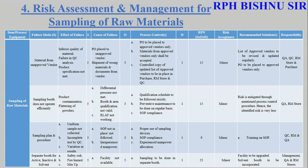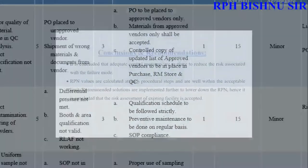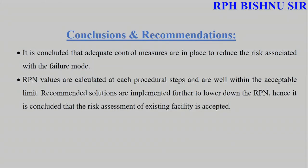Additional failure modes for sampling of raw material include: materials from unapproved vendors, sampling booth not operating efficiently, sampling plan and procedures not in place, and no separate booth for active, native, and solvent materials. Conclusion and recommendation: adequate control measures are in place to reduce the risk associated with the identified failure modes.